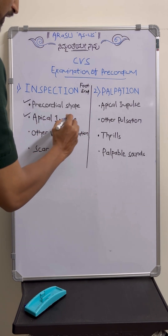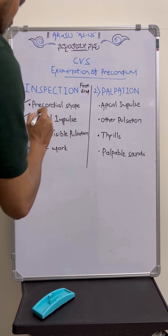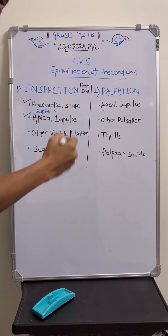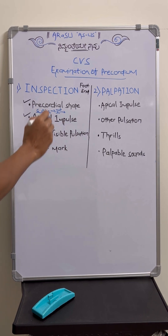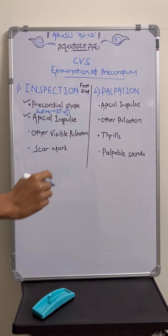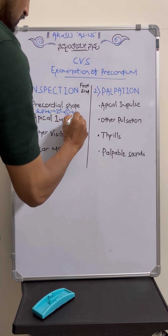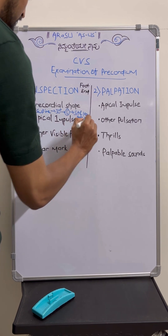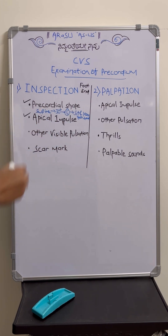First try in the supine position. If not able to visualize, ask the patient to incline to 30 degrees. Even then if the impulse is not visualized, ask them to slightly turn to the left lateral side. Even then if it is not visualized, ask the patient to sit and lean forward. Once you are able to visualize, just tell the location of the impulse.